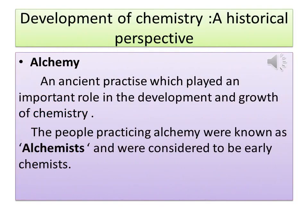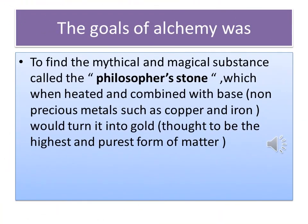Our next topic is the development of chemistry — that is a historical perspective. An ancient practice which played an important role in the development and growth of chemistry is known as alchemy, and the people practicing alchemy were known as alchemists, also called the early chemists. The goal of alchemy was to find the mythical and magical substance called the philosopher's stone. Their main aim was to refine base metals such as copper or iron into gold, as gold is considered to be the precious metal.